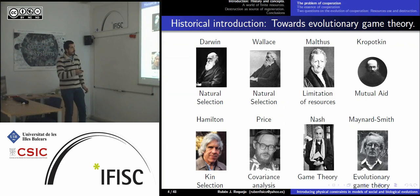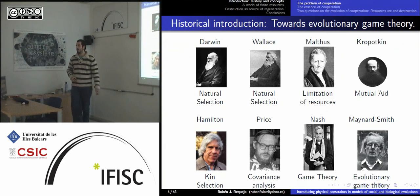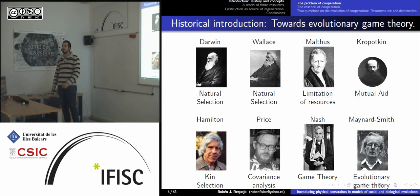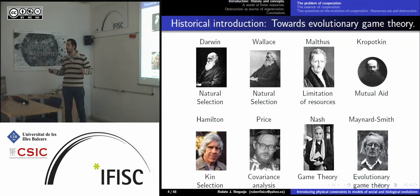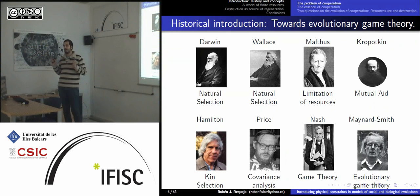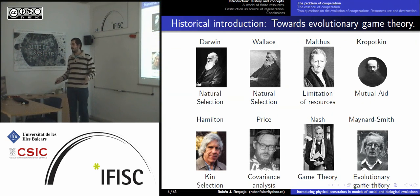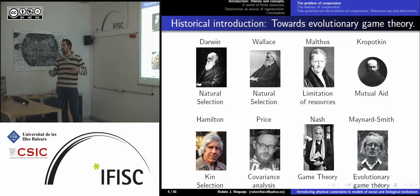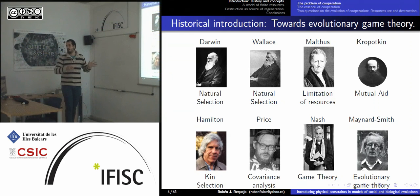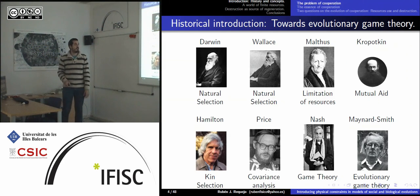Kropotkin in 1900 said this is true but not totally true. He had been traveling around Siberia and other places, and what he observed was that when the environment is very harsh and not supporting life well, individuals are actually cooperating to survive. So individuals are not always in a struggle for life — there is also what he called mutual aid, which he proposed as an important factor for evolution.